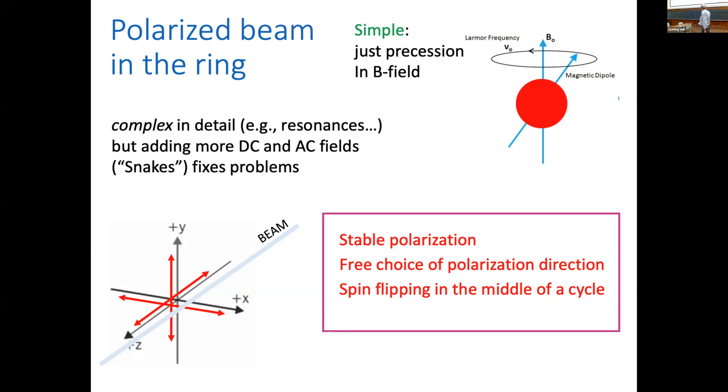In the end, what one gets is a stable polarization—actually the lifetime of the polarization is longer than the beam lifetime. Free choice of the direction of polarization can be up or along or sideways. And it is also possible to flip the spin of the polarization in the middle of a measurement, which is wonderful if you want to eliminate systematic errors.